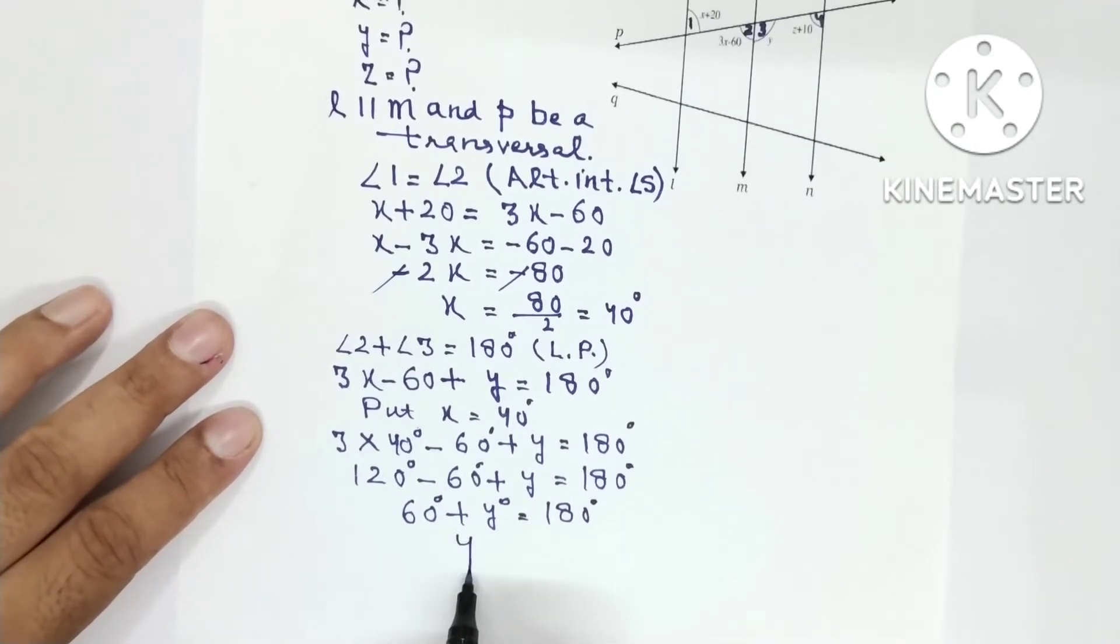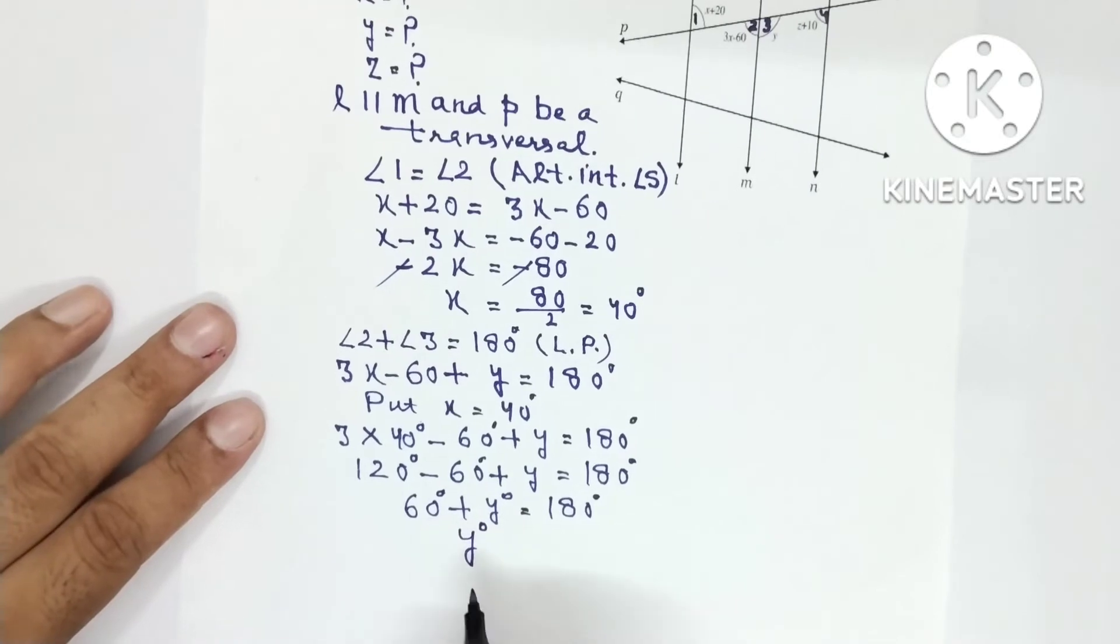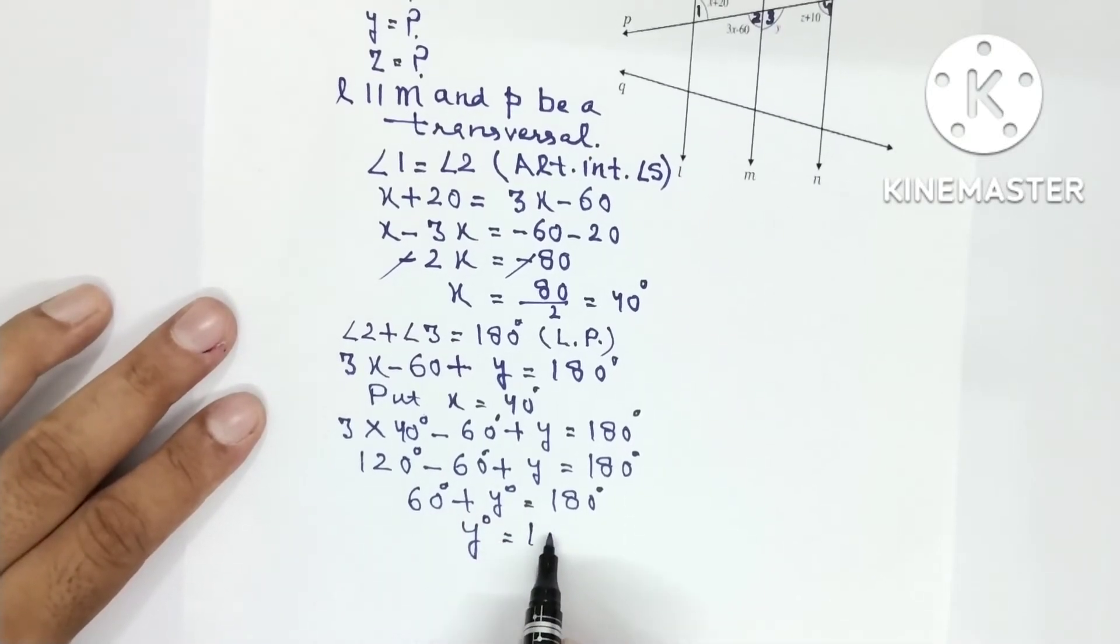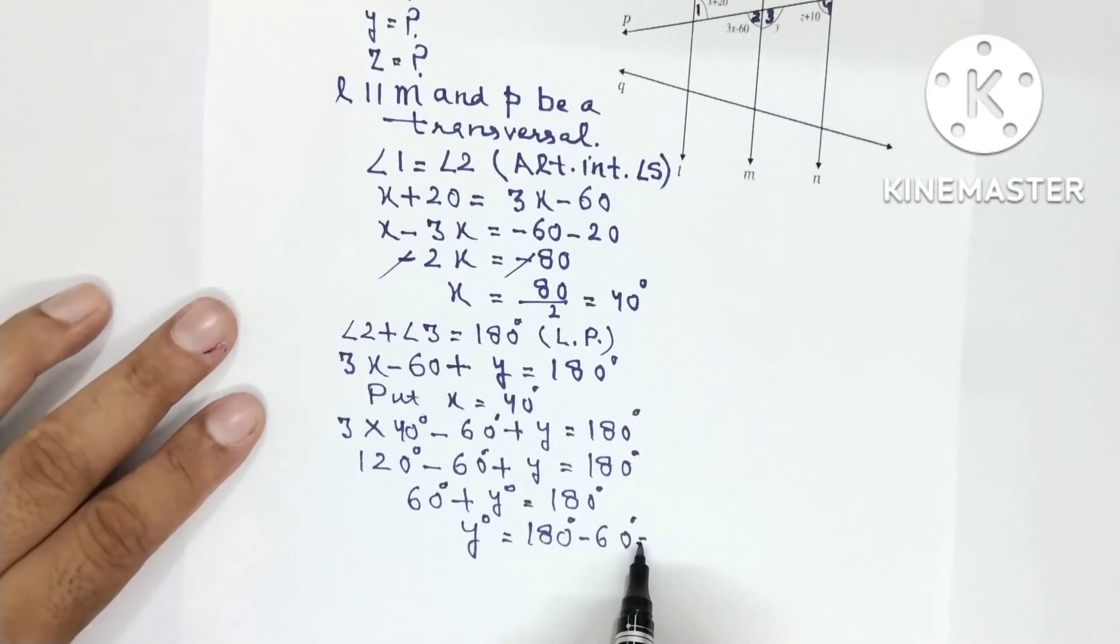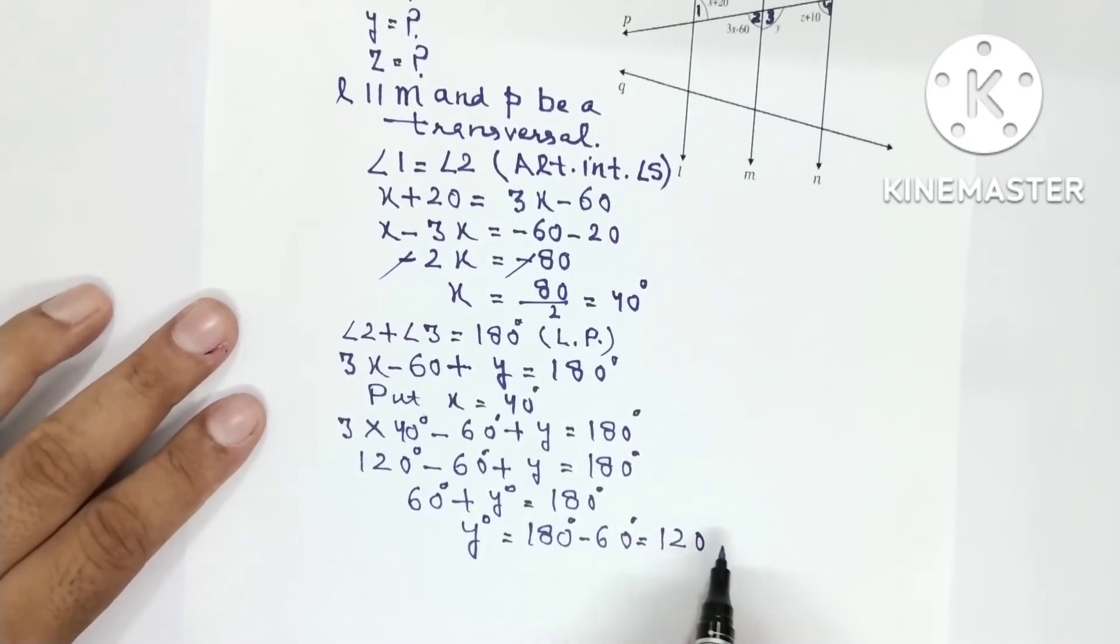It is equal to 180 degree, so Y degree will be what? 180 में से क्या minus करेंगे? 60. 180 degree minus 60 degree and it is 120 degree.